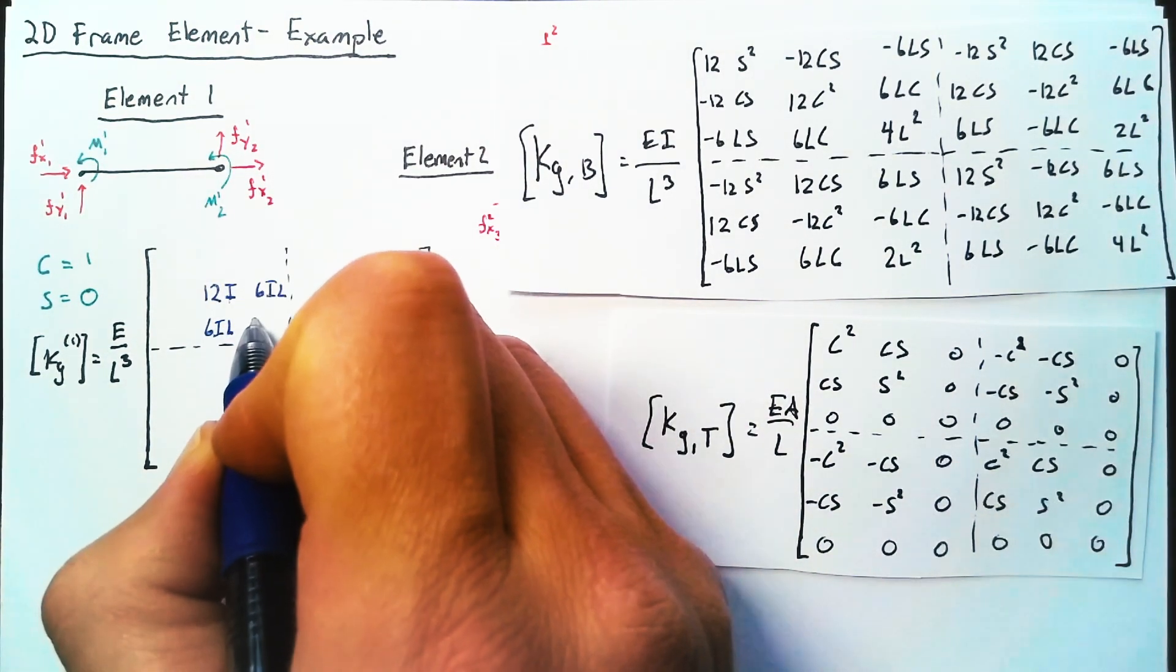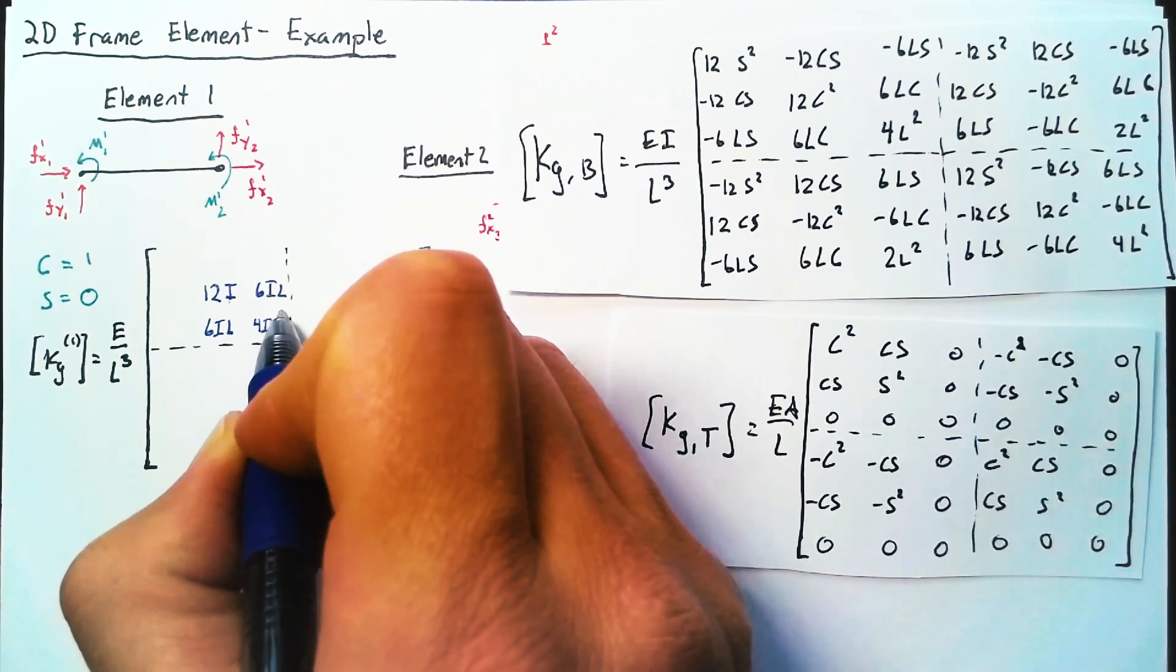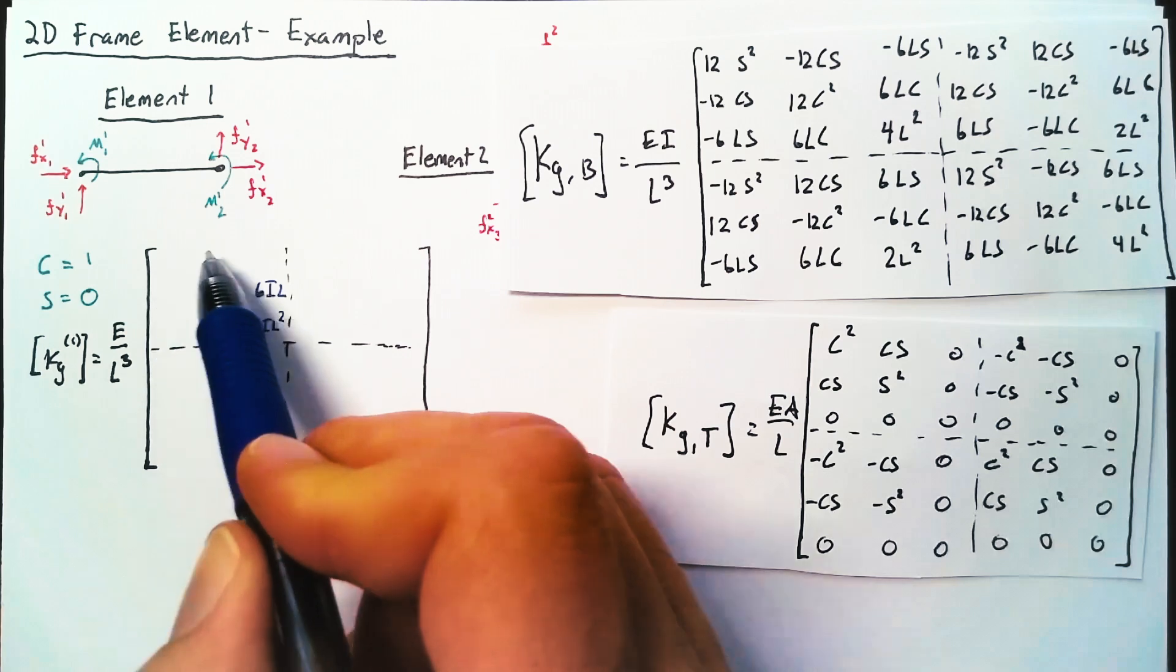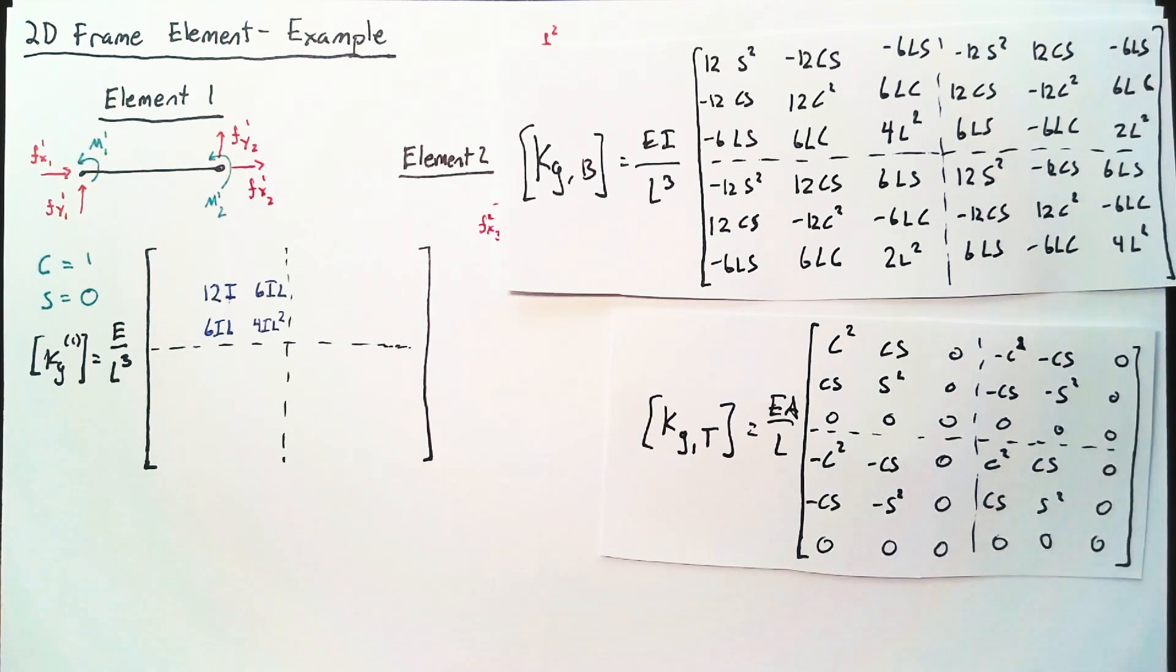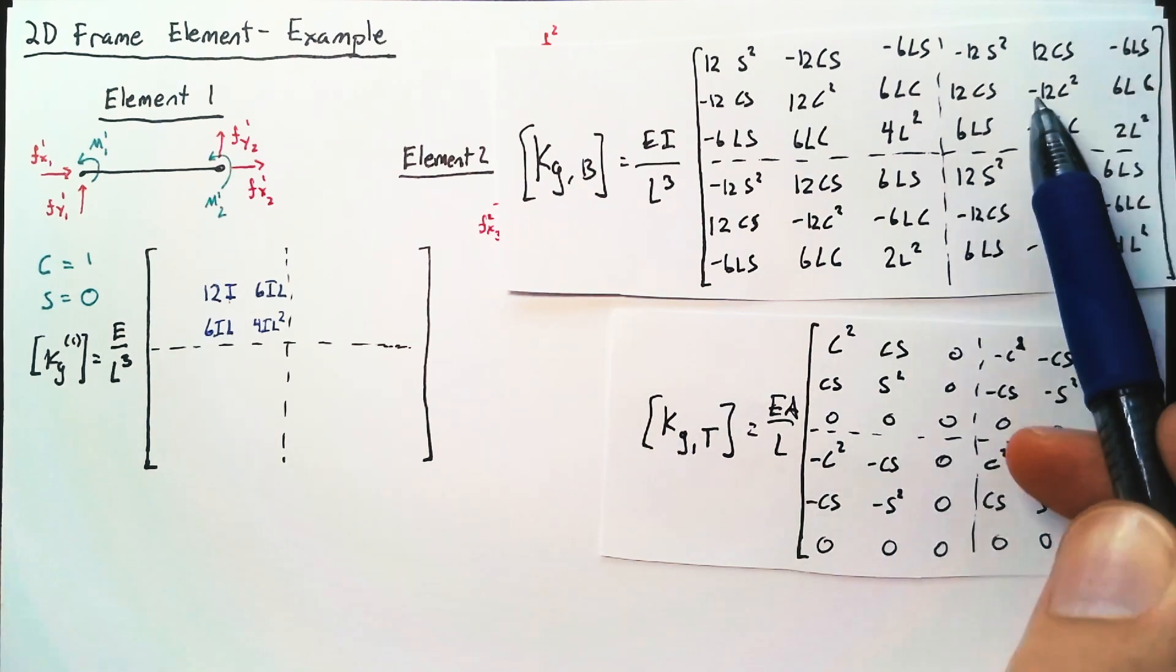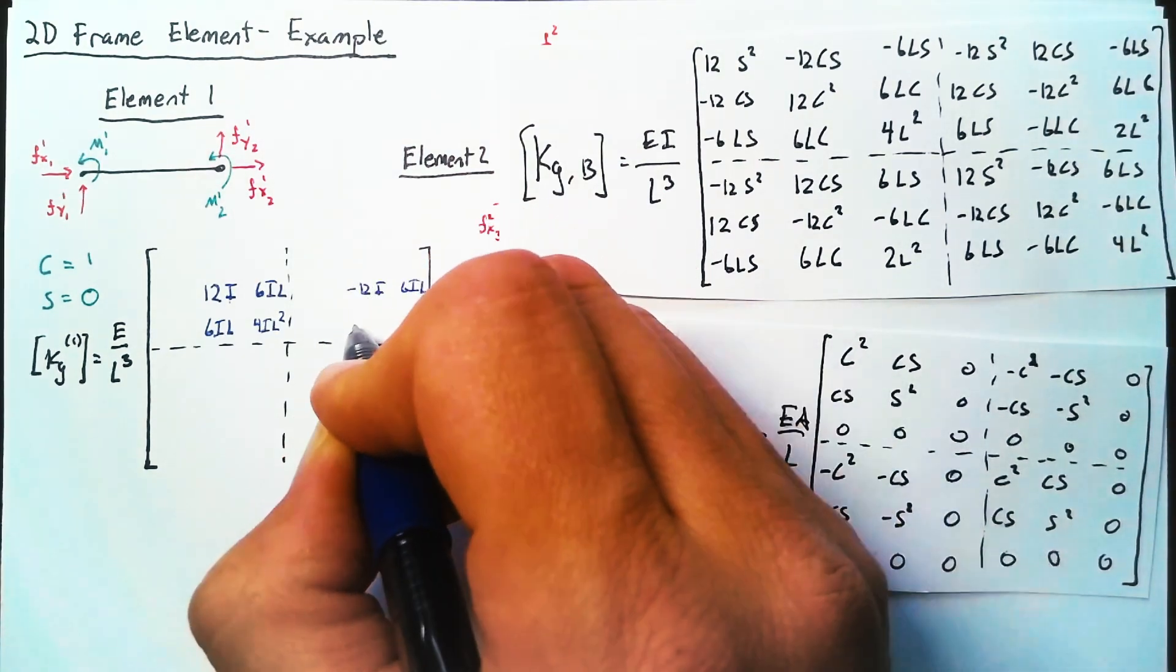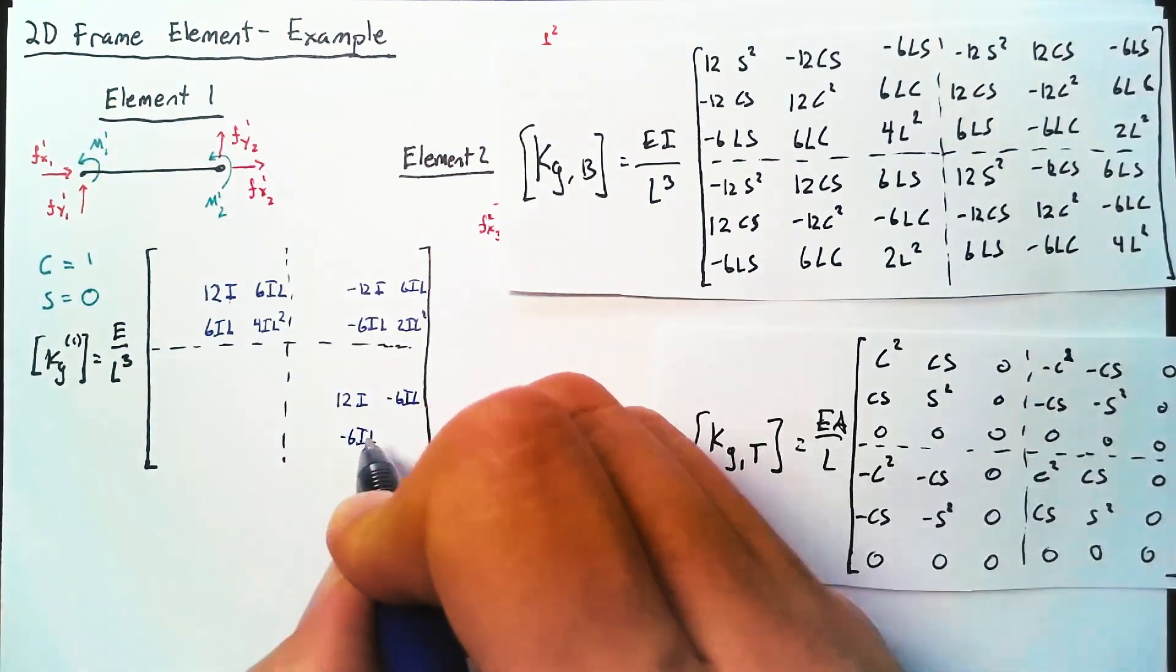and then 4IL squared in the 3,3 spot. Now all of these are going to be zero, but we're going to wait until we have both pieces in before we go ahead and write all our zeros out. So we can go ahead and do that for the other three sub-matrices, and we'll end up with the beam part in this element.